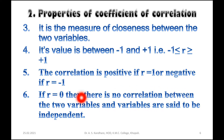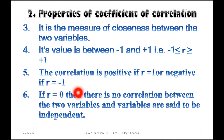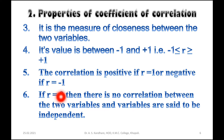If small r, that is the coefficient of correlation, is equal to zero, then there is no correlation between the two variables and the variables are said to be independent. When the coefficient of correlation value is zero, you can understand that the two variables are independent and do not show any relationship between them.